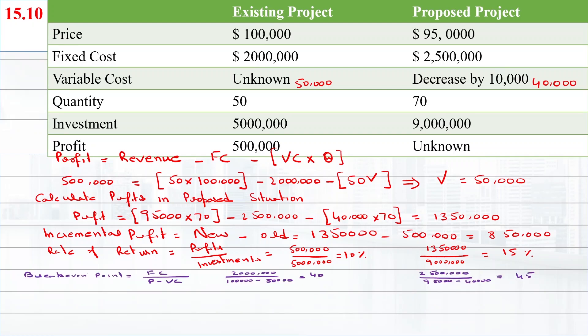So the break-even point increases from 40 to 45 units with the investment.